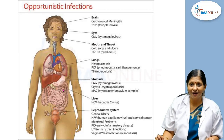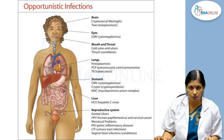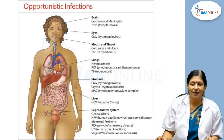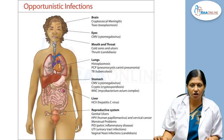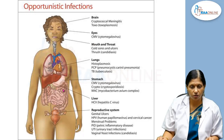The brain can get infected with cryptococcus causing cryptococcal meningitis, or toxoplasma causing toxoplasmosis. In the eye, there can be cytomegalovirus infections. In the mouth and throat, there can be cold sores, thrush, and ulcers from candidiasis. In the lungs, there can be histoplasmosis, Pneumocystis carinii pneumonia, and tuberculosis.